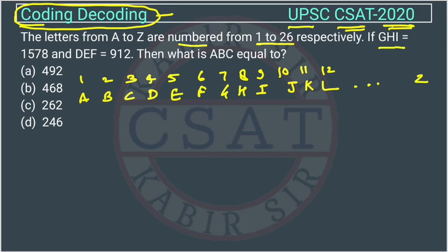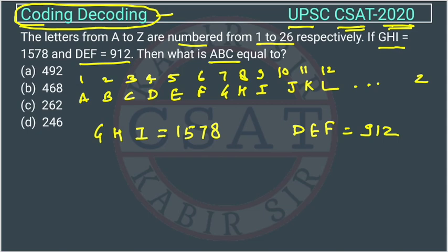They have given that GHI equals 1578, and DEF equals 912. The question is asking what is ABC equal to.